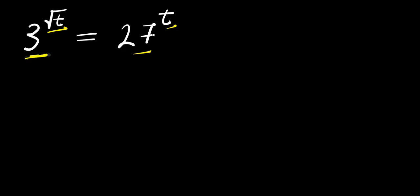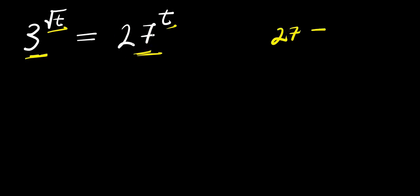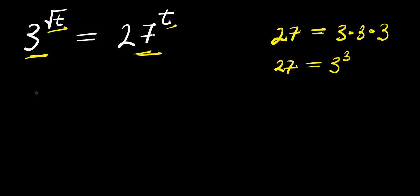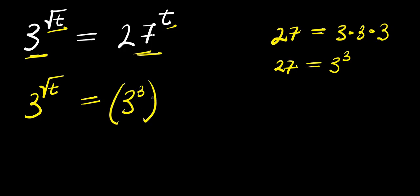Now the base here is 3 and the base here is 27. So we can express this 27 as a product of multiples of 3. Remember 27 equals 3 times 3 times 3, so we have 27 equals 3 to the power of 3. So we are going to have 3 power square root t equals 27, that is 3 power 3, raised to the power of t.